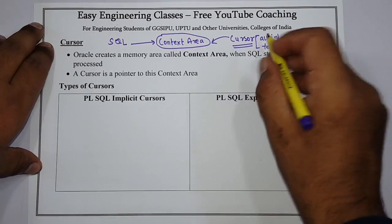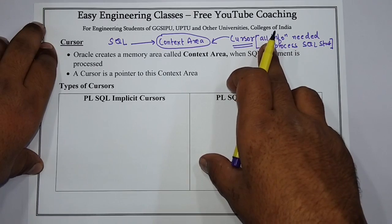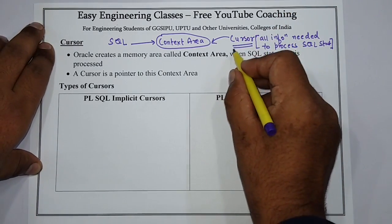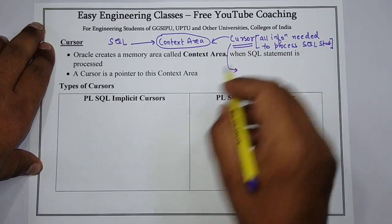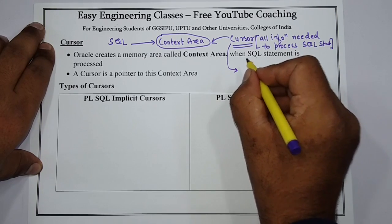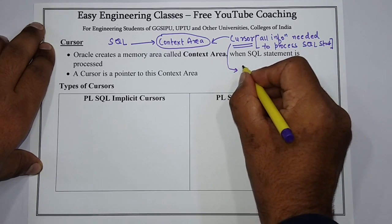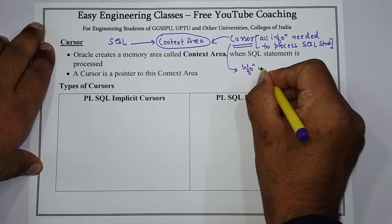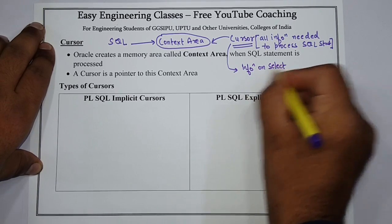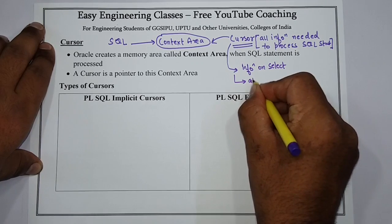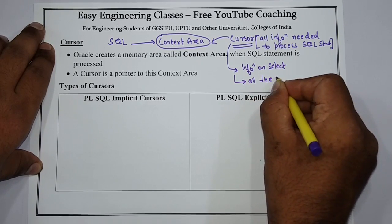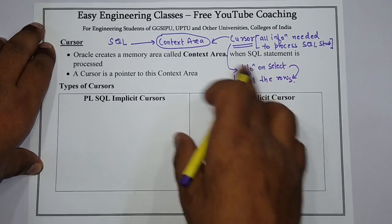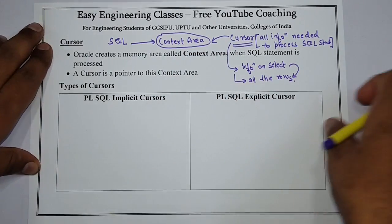A cursor also contains information on a SELECT statement and the rows of data accessed by it, which is very important when we see the example. So, information on SELECT and all the rows accessed by that SELECT statement — all this information is in the cursor.